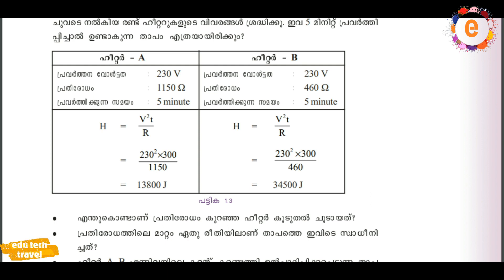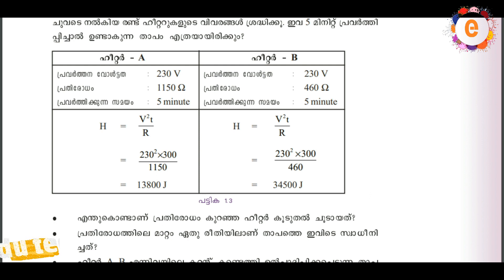For the first case: voltage is 230V, resistance A is 150 ohms, resistance B is 460 ohms, time is 5 minutes for both. Then H is equal to V² divided by R, multiplied by T. It is not H equal to I squared R but H equal to V squared by R into T.